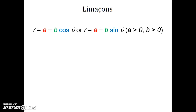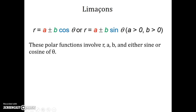In general, limacons have this form: R equals A either plus or minus B cosine theta, or R equals A plus or minus B sine theta. A, B, and sine or cosine are the secrets to success for graphing these limacons. Sine and cosine play a certain role — that needs to go in your notes. And there are three different kinds of limacons, which comes about from the role of A and B.